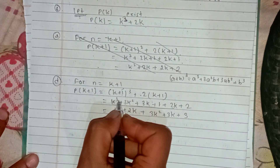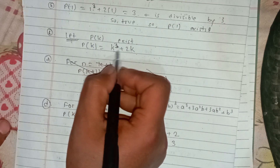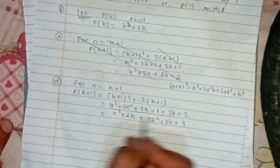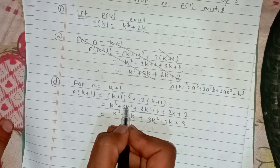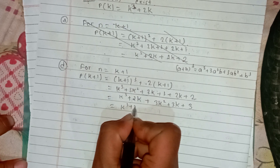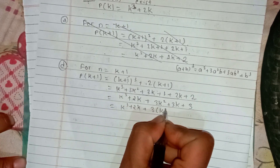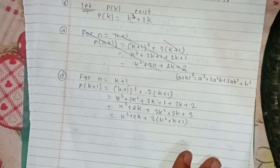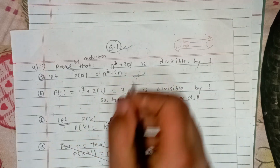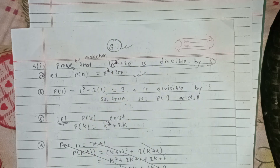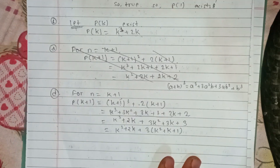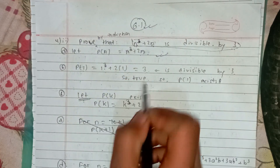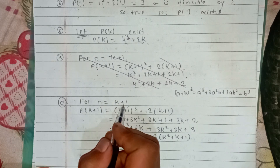We have k cube plus 2k, which is P(k) and is divisible by 3 by assumption. The remaining terms are 3k squared plus 3k plus 3, which equal 3 times k squared plus k plus 1 — also divisible by 3. So the sum is divisible by 3. This is the proof by induction method: P(1) exists, P(k) exists, therefore P(k+1) exists.